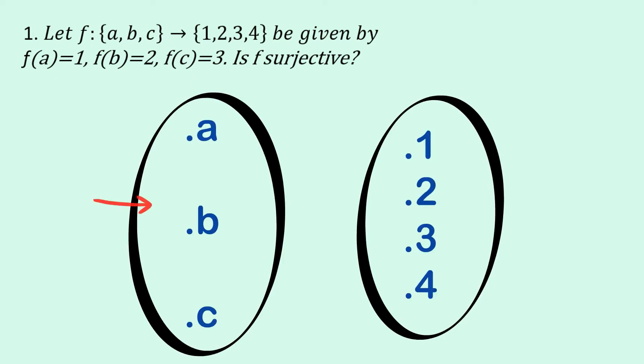Let's start by just mapping out graphically or geometrically what's going on here. Here we have the domain a, b, c, and over here we have the co-domain one, two, three, four.